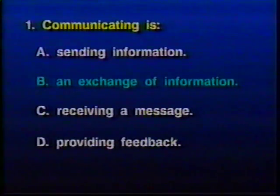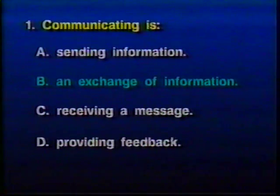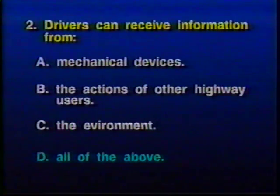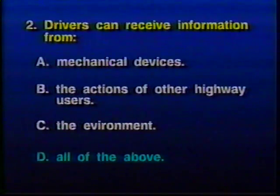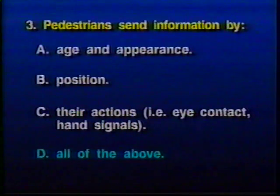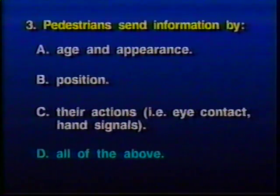Answer review. Question one: The correct answer is B — signaling your intention through the use of horn, lights, or lane position helps other roadway users better understand what you intend to do and in turn indicate their intentions; in short, it is an exchange of information. Question two: The correct answer is D — vehicle turn signals and headlights, pedestrian age and action, road surface and atmospheric conditions are all communication devices. Question three: The correct answer is D again — a person's age and appearance, position relative to the roadway, and whether they are facing or looking away from traffic are all clues to actions a driver may expect.